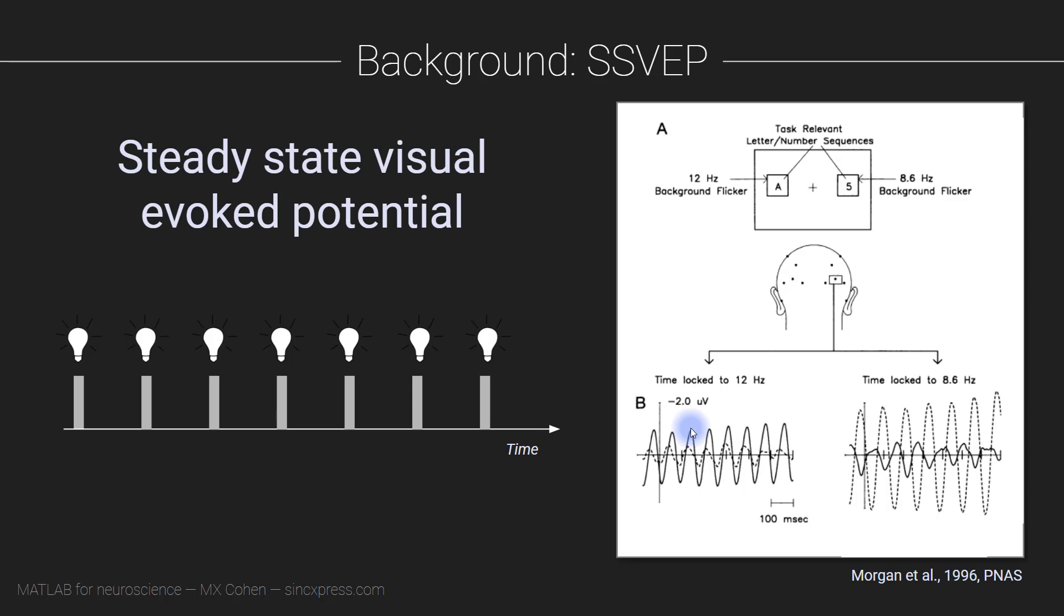Now that on its own isn't terribly surprising. However, it turns out that the amplitude of this rhythmic brain response to the flashing lights is modulated by cognitive factors, including attention.